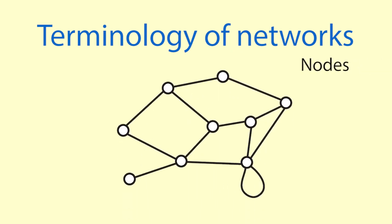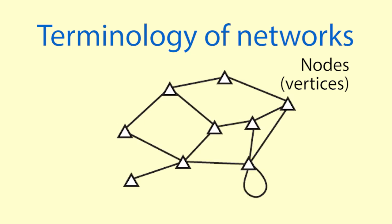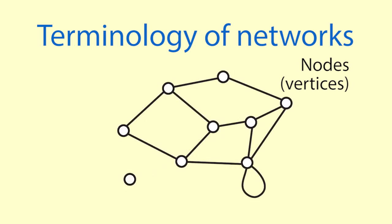The terminology of networks. Nodes are sometimes called vertices. They can be represented by circles, just as intersections, or sometimes other shapes. It is possible to have a node in a network that is not connected to any arcs.